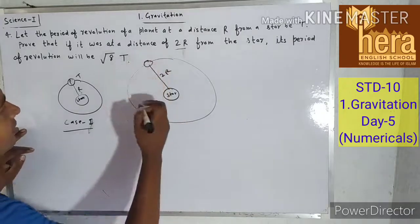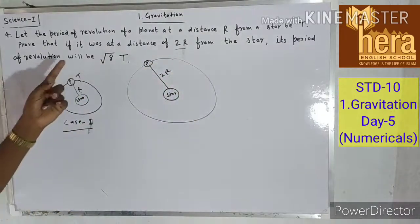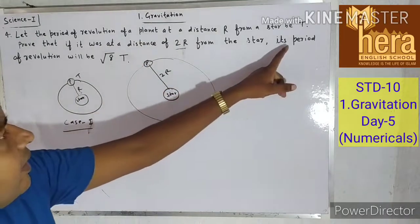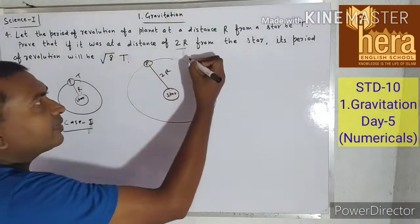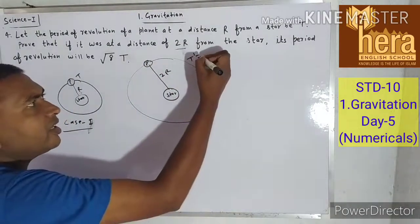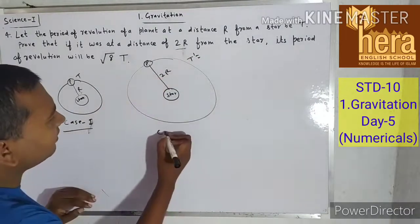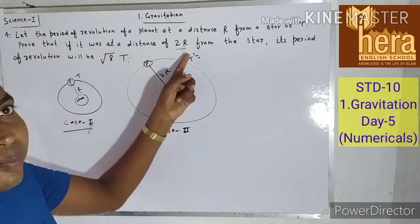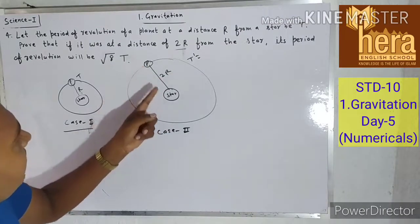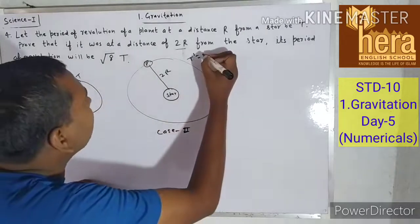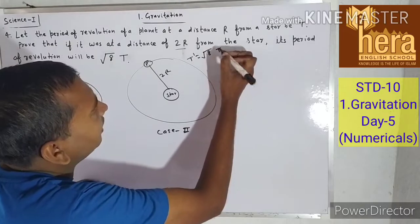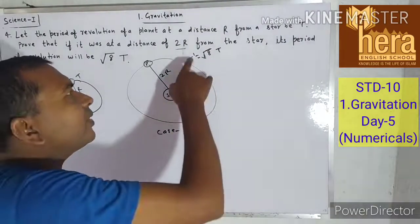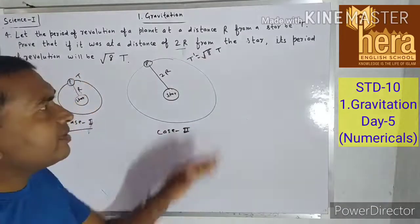Case 2: the distance becomes twice, i.e., 2R. We have to prove that if the distance between the planet and the star is 2R, then the new period of revolution T' will be equal to √(8)·T. This is what we have to prove.